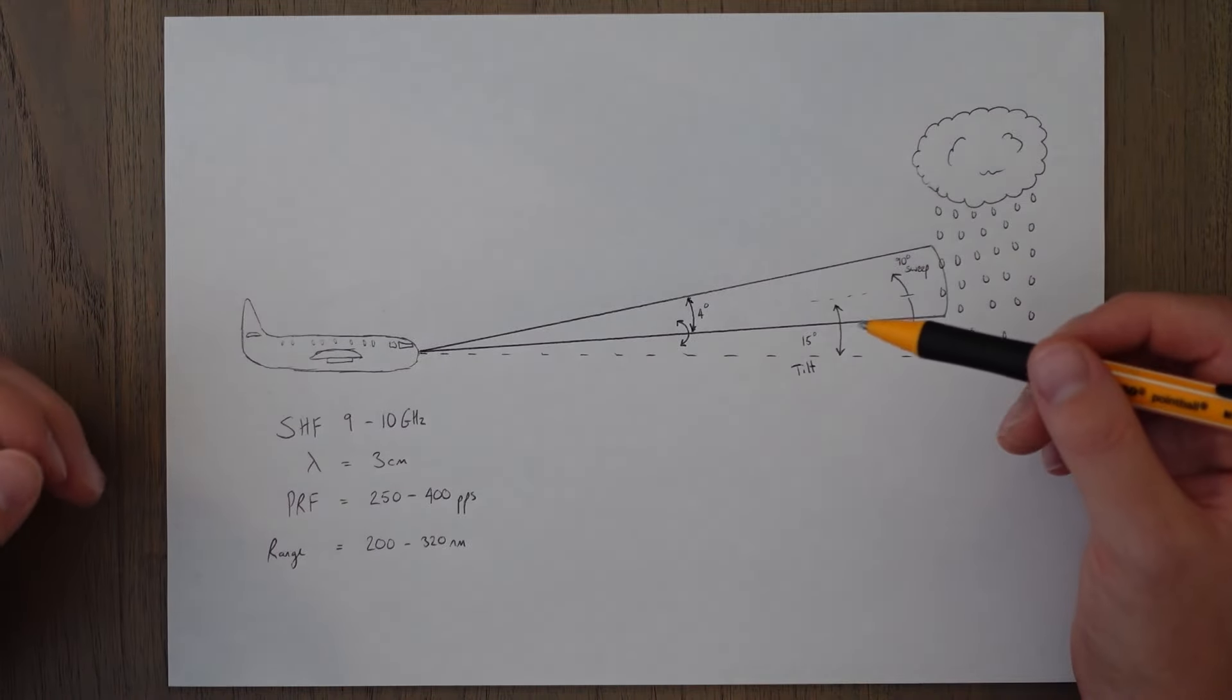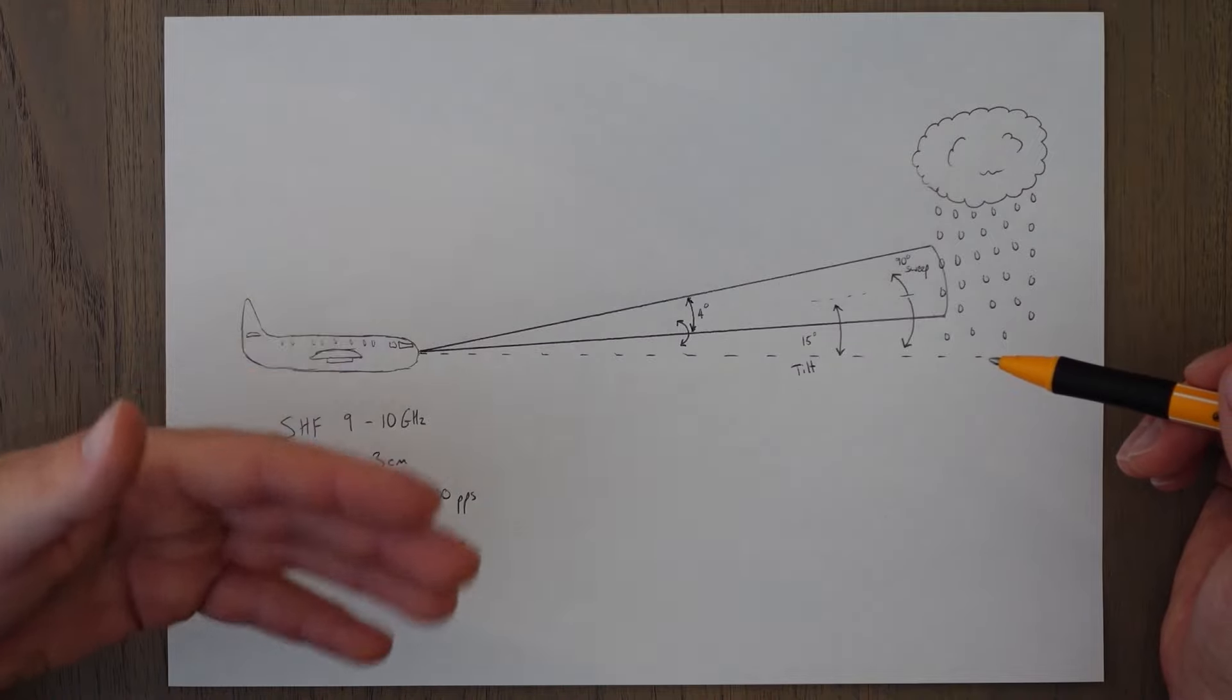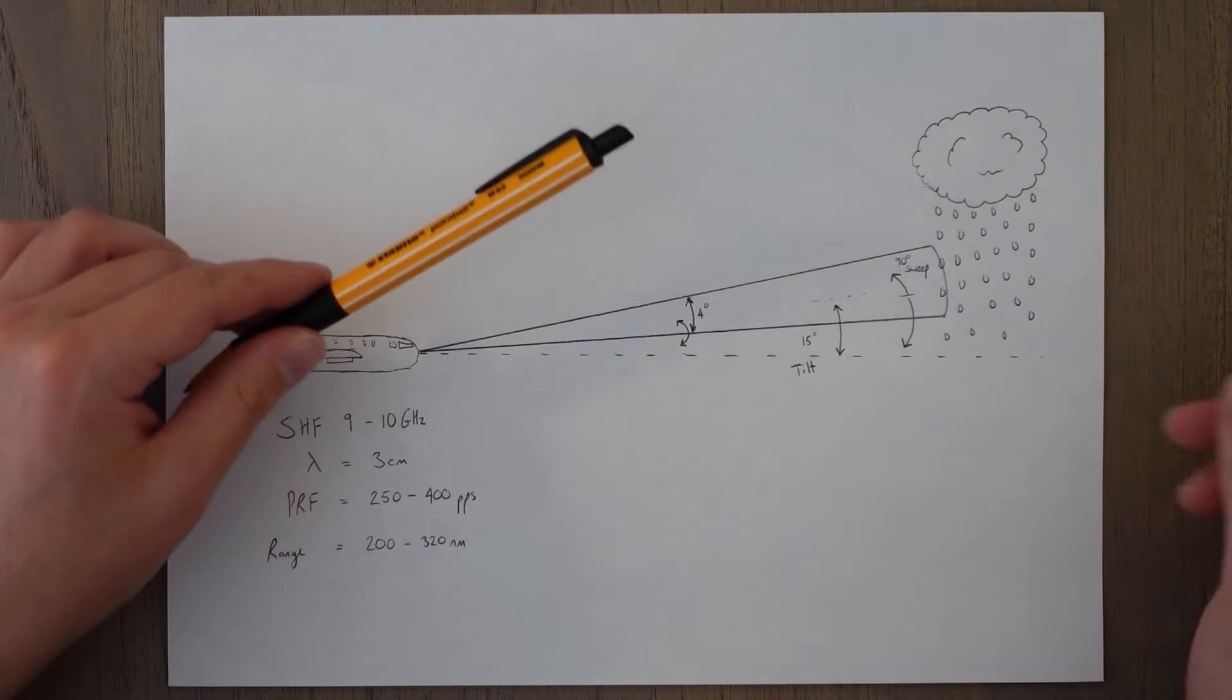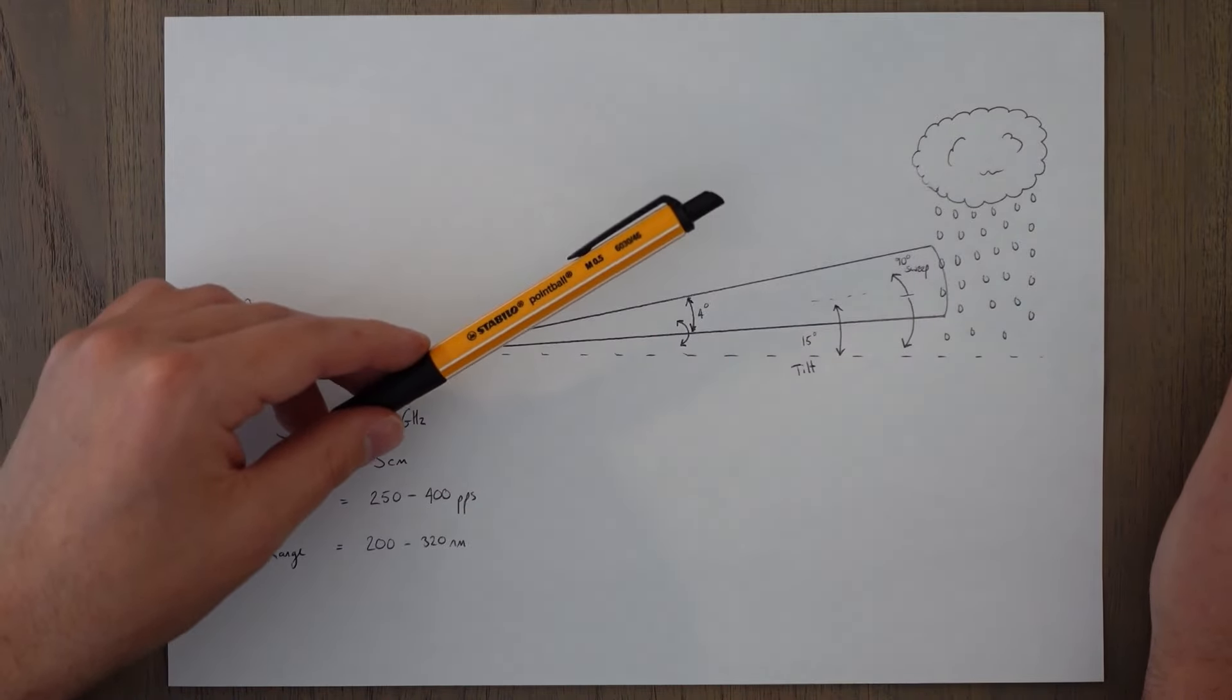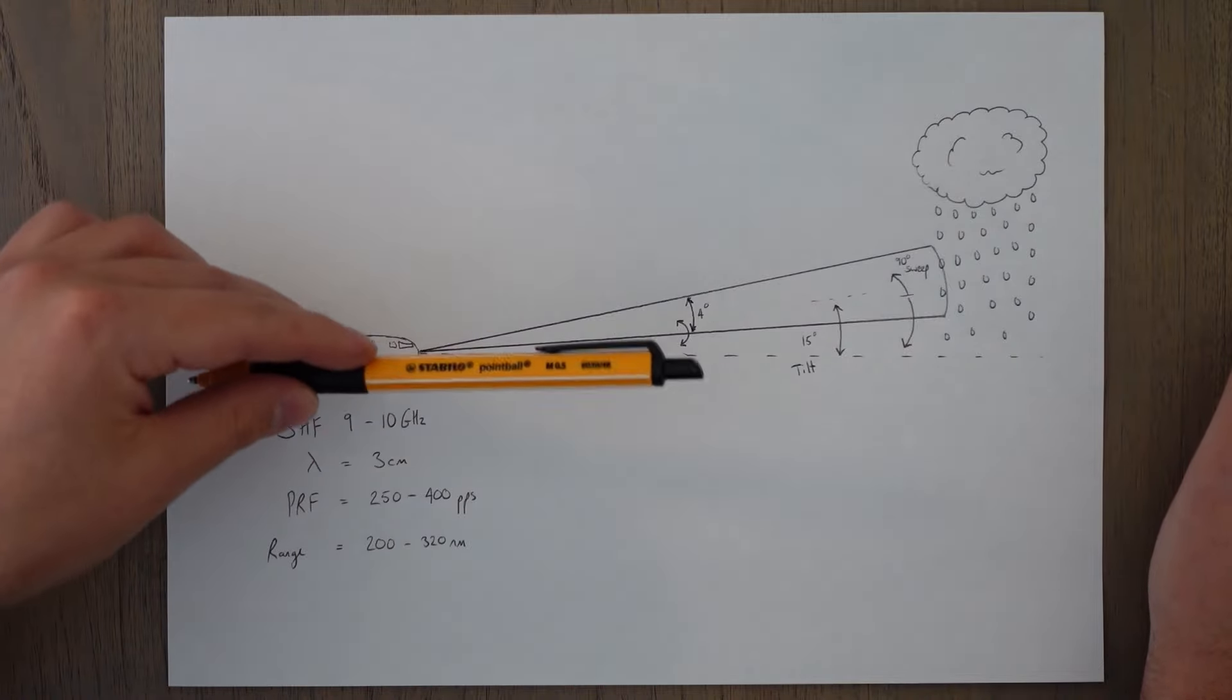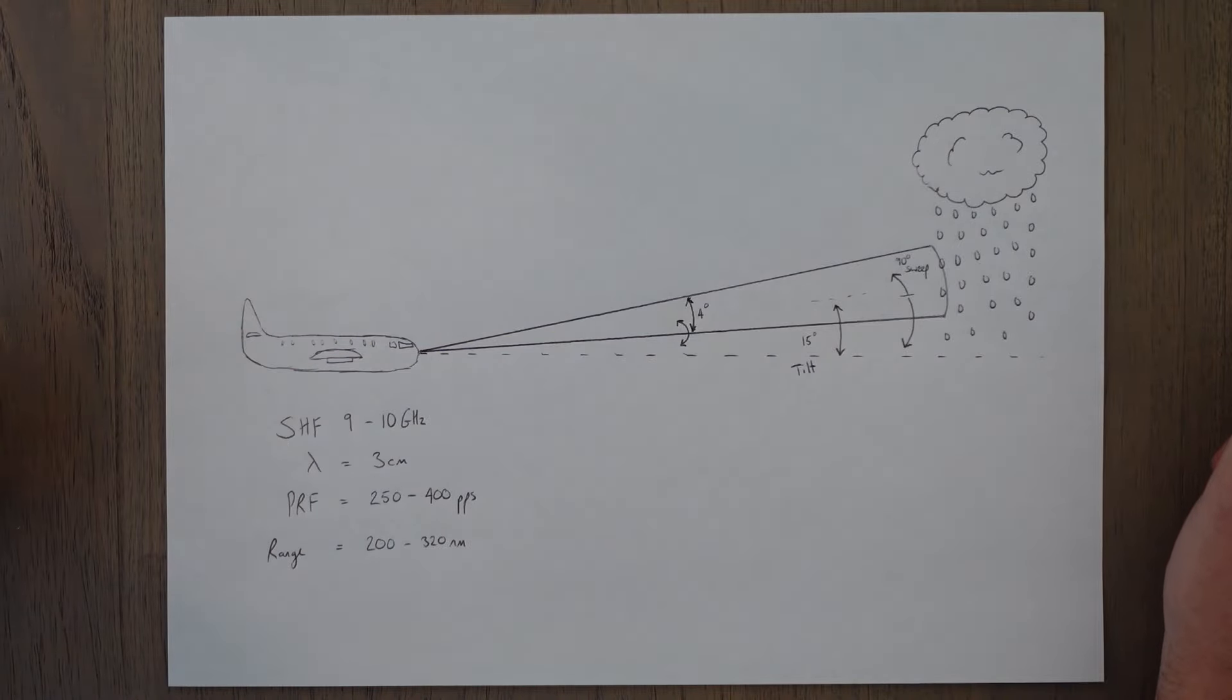The aerial will also be gyro stabilized in pitch and roll so that the sweep and the tilt are always with respect to the earth's horizontal rather than the aircraft's pitch. For example if we have 5 degrees of tilt up set and our aircraft pitch is 3 degrees then we only need to pitch the weather radar up by an additional 2 degrees to get that 5 degree relative to the horizontal because of that stabilization.